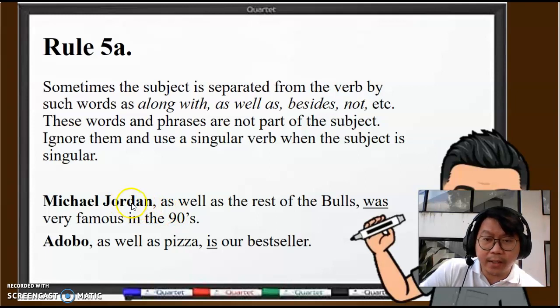What is the subject here? It's Michael Jordan. The rest of the Bulls is mentioned, but they don't affect the singularity of the subject Michael Jordan. What you have to understand is "as well as" is not like the word "and," because if you use "and," the subject becomes plural.